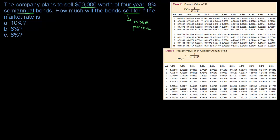If the market rate is 10% and the company is offering 8% for their bonds, then I'm going to need some kind of incentive to buy those bonds — so this is going to be a discount. If the market is 8% and the bonds are 8%, those are the same, so they will sell for par, also called face value. And if the market rate is 6% but the company sells their bonds for 8%, people are going to want those bonds and would be willing to pay more for the higher rate of return, so these bonds are going to sell for a premium.